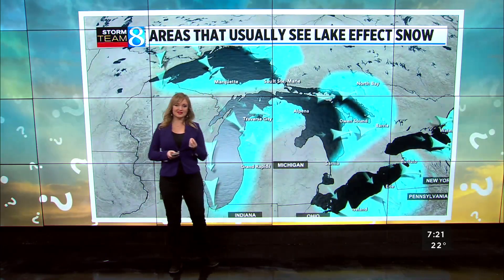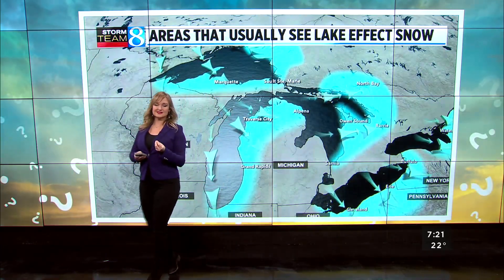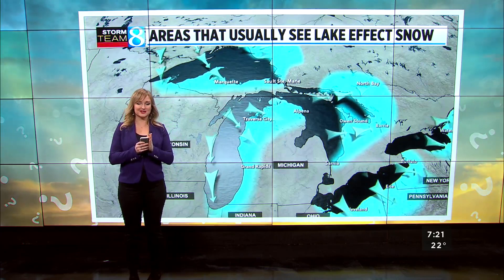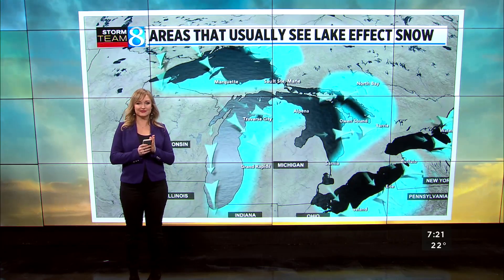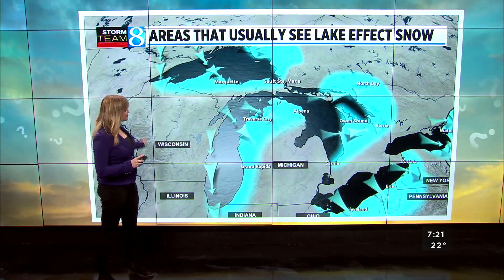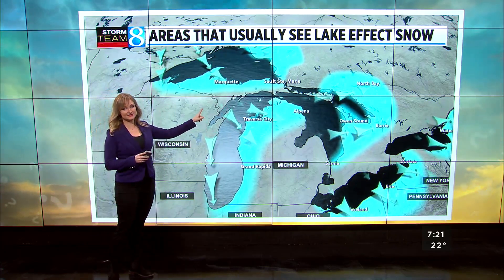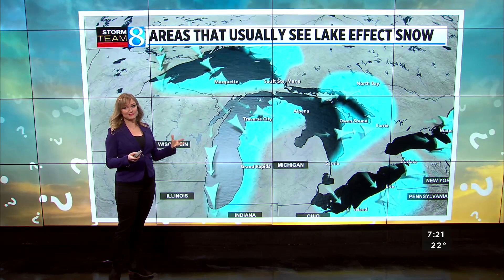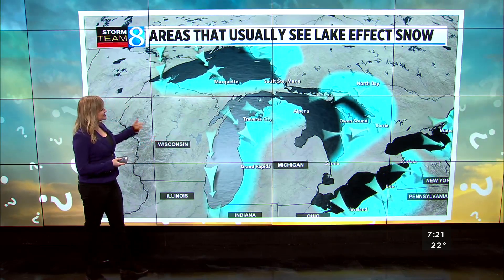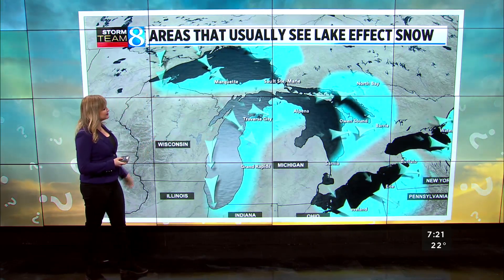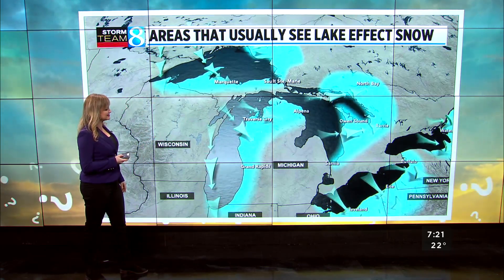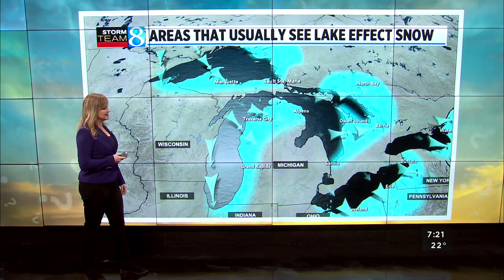You'll always know something is lake effect if it starts in the middle of Lake Michigan or in the middle of Lake Superior. In fact, all of our Great Lakes are capable of producing lake effect snow, and we typically see a lot in places like Marquette, Traverse City, Muskegon, and Grand Rapids.